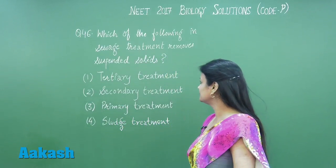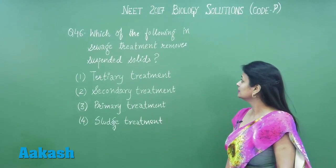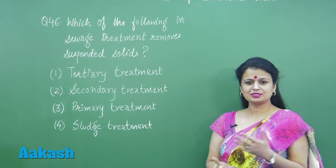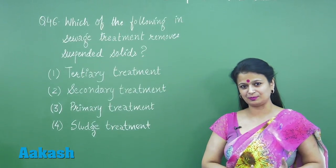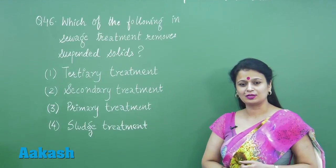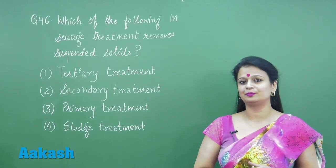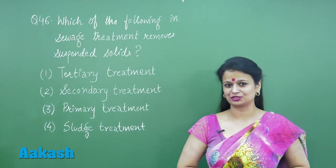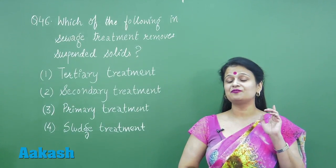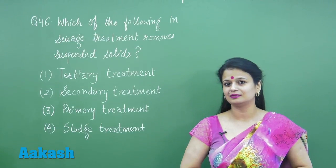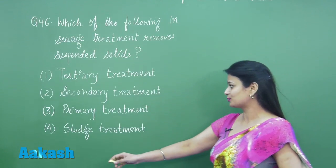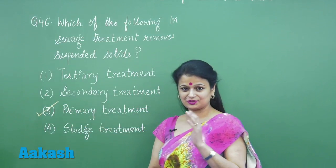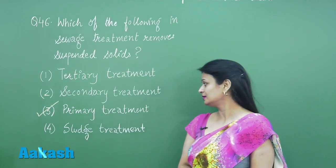Looking into the first question, number 46: which of the following in sewage treatment removes suspended solids? This is a question related to the STP. The suspended solids as well as floating debris are removed through the filtration and sedimentation process. This is the first process done in the sewage treatment plant, and this first process is called primary treatment. So this is the right option for this question, that is option number three.